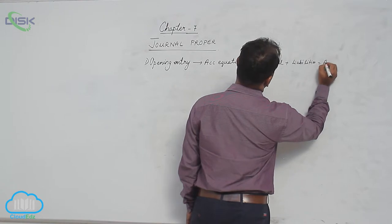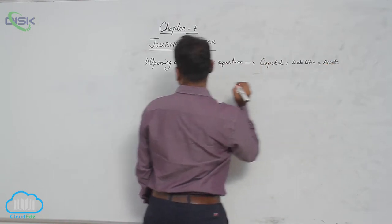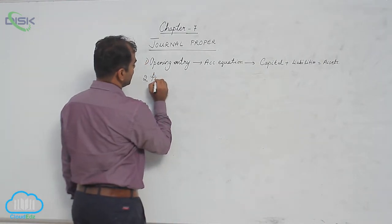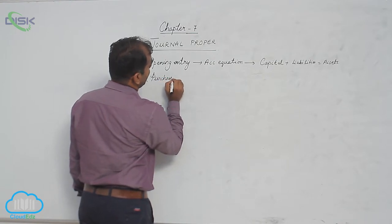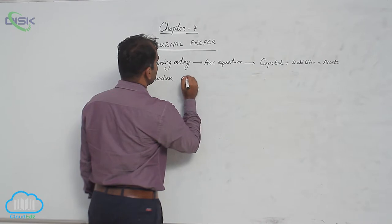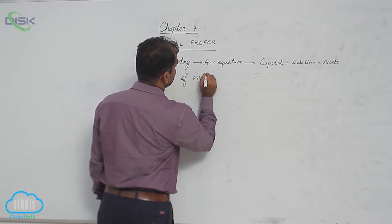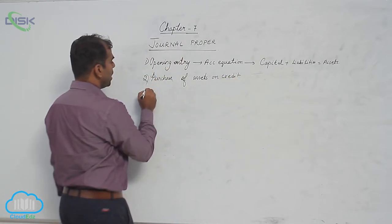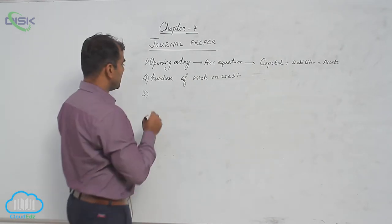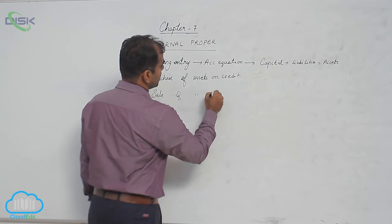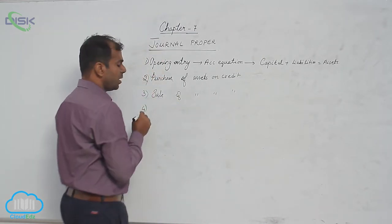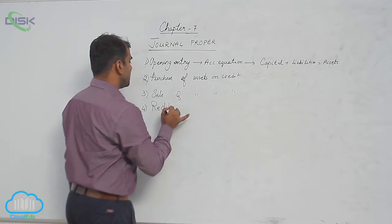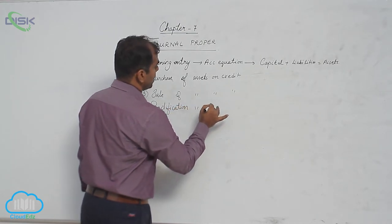The accounting equation is: capital plus liabilities equals assets. Number two, we record purchase of assets on credit. Number three, we record sale of assets on credit.